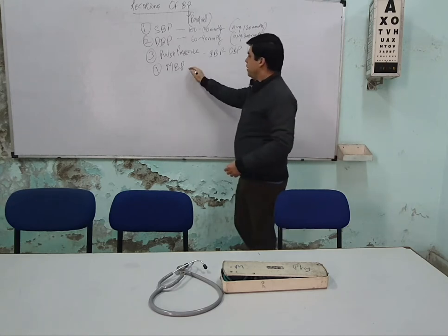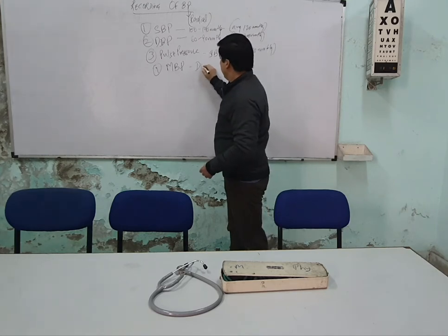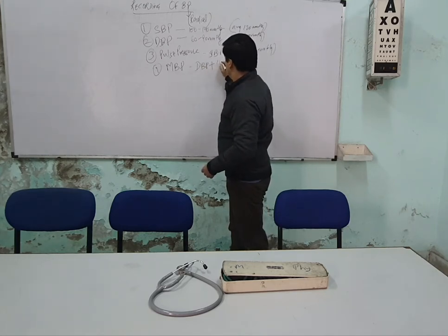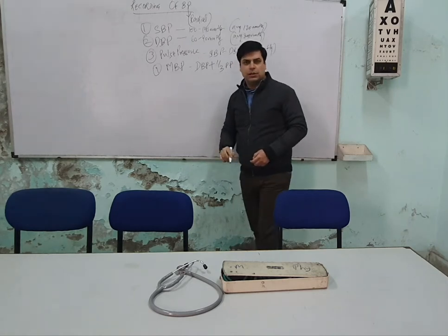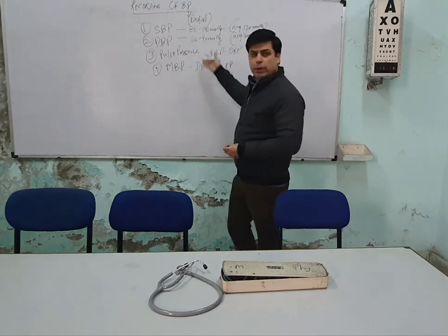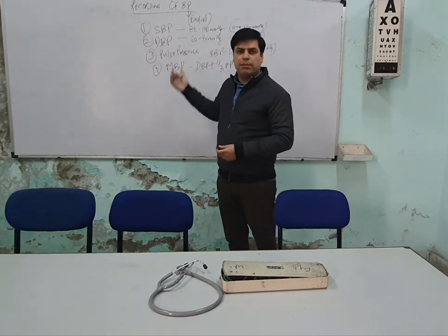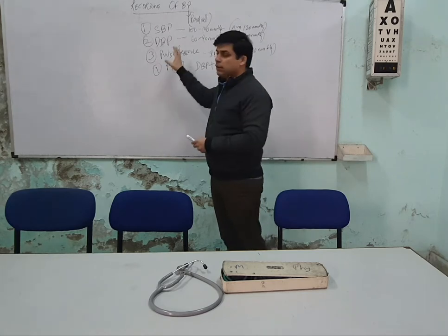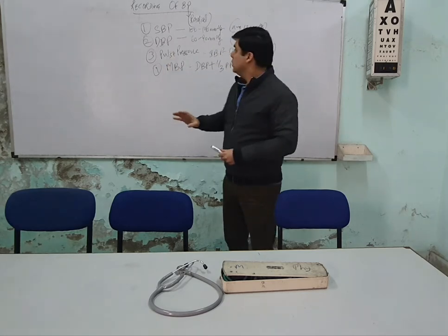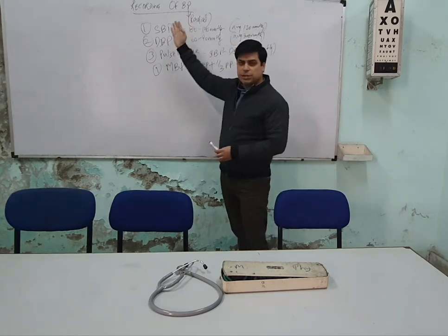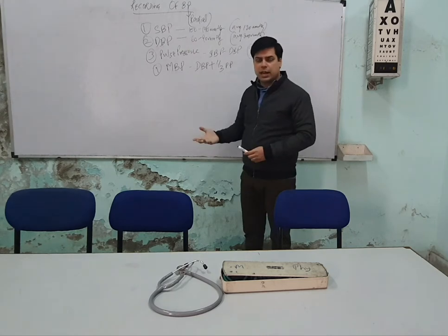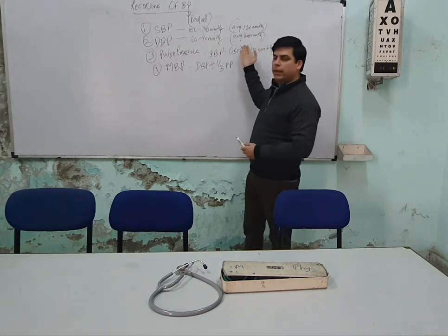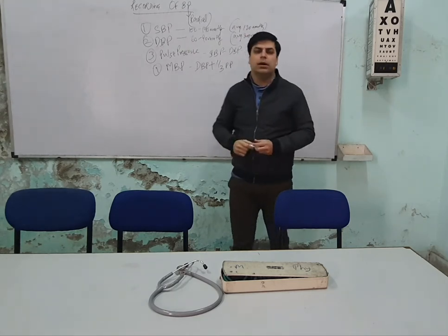Mean blood pressure is calculated by the formula: diastolic blood pressure plus one-third of pulse pressure. Blood pressure is expressed as systolic over diastolic, so the average standard value is 120/80 mmHg.